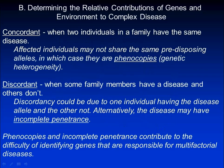When two individuals in a family have the same disease, we say they are concordant. When some family members have a disease and others don't, we say they are discordant.